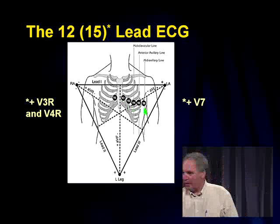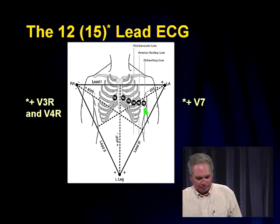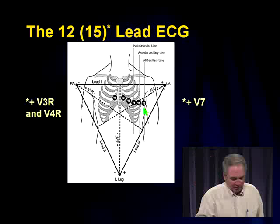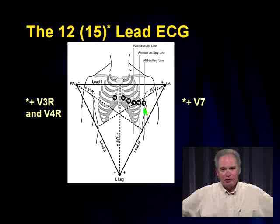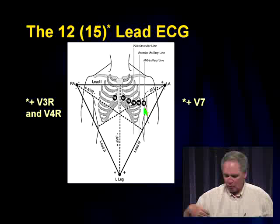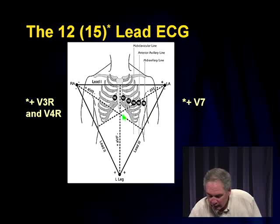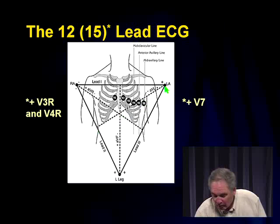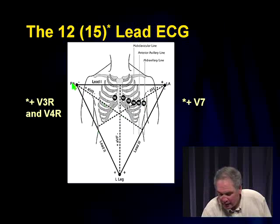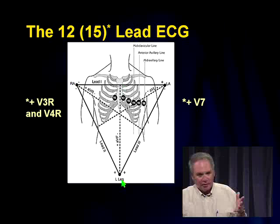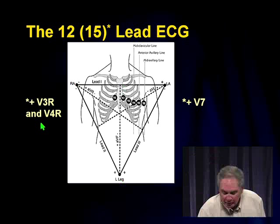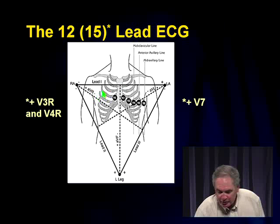V5 and V6 give you an excellent view of the left ventricle. The augmented leads — aVL, aVR, and aVF — give views to the left arm, right arm, and downward toward the feet respectively. In pediatrics, we sometimes add extra right-sided chest leads to get a better look at the right ventricle.